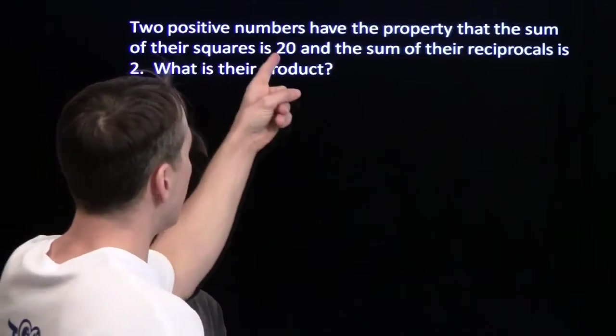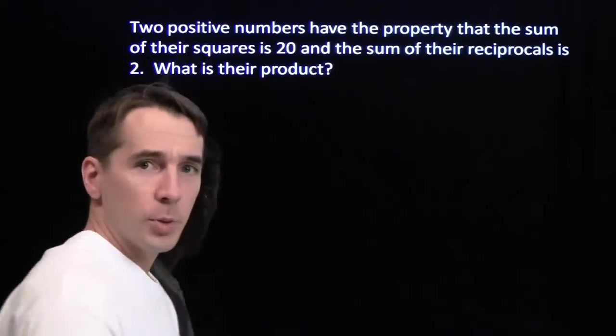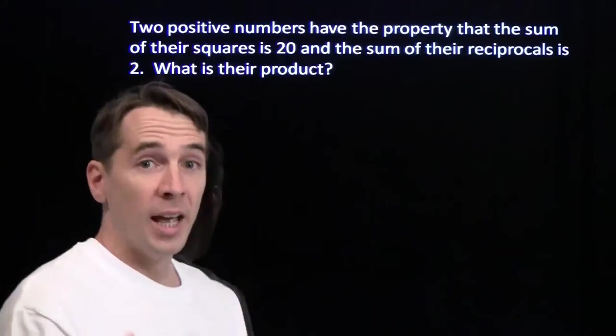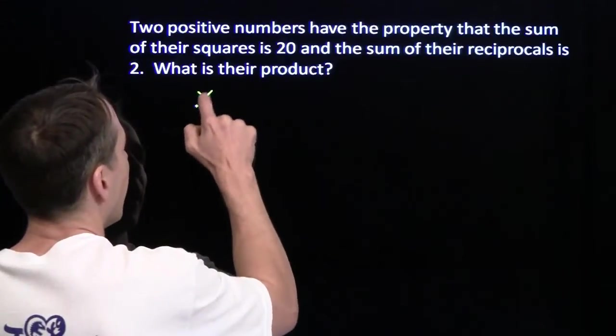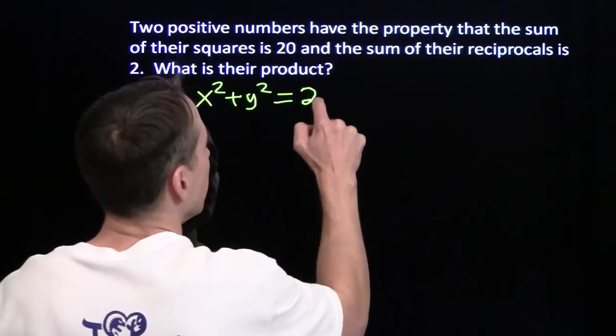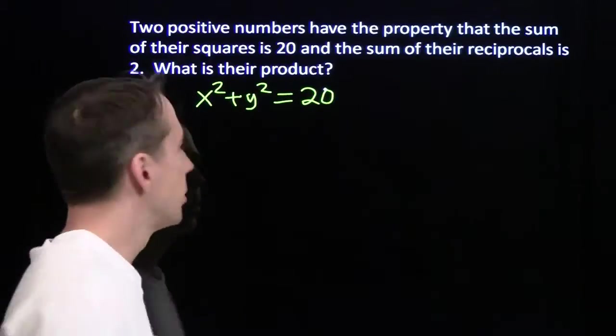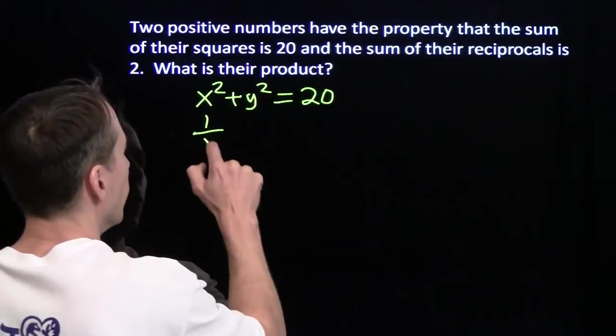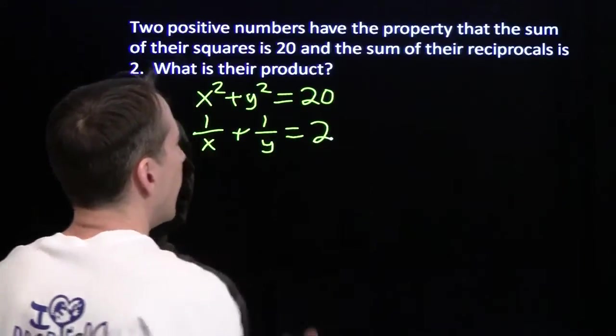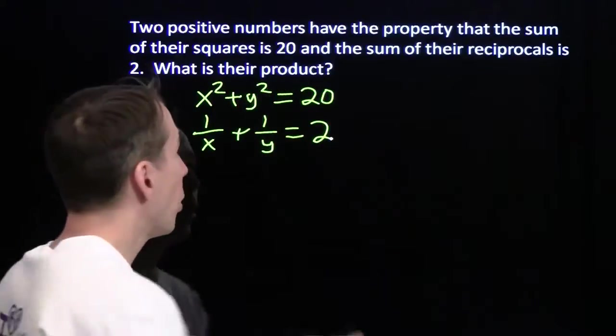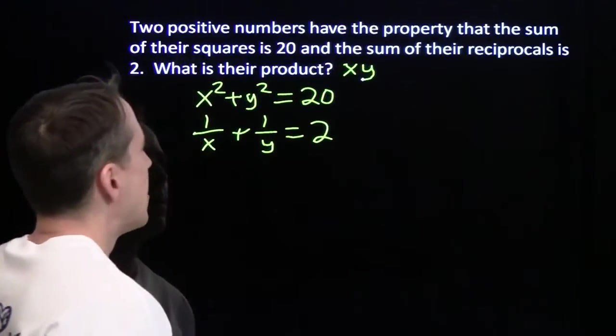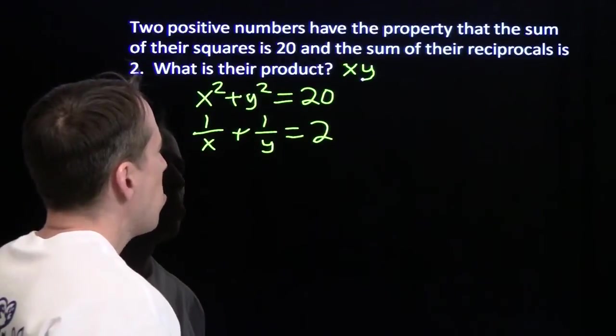In the meanwhile, we're going to try one more algebra problem, and we're going to see if we can find the answer without finding the answer. Alright, we've got two positive numbers. The sum of their squares is 20. Well, that's just basically an equation already. I'm going to call the numbers x and y. And we've got x squared plus y squared is 20. And the sum of their reciprocals is 2. And we want to find their product.